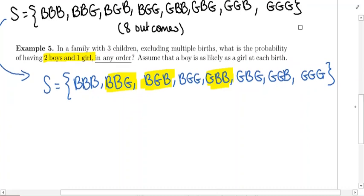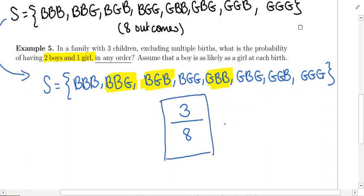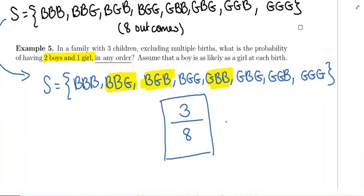All we've got to do now is compute our fraction. The bottom number is going to be eight because there are eight possible outcomes. Three of them — the ones highlighted in yellow — have two boys and one girl. So the probability is three-eighths of that occurring: of a family having two boys and one girl in any birth order.